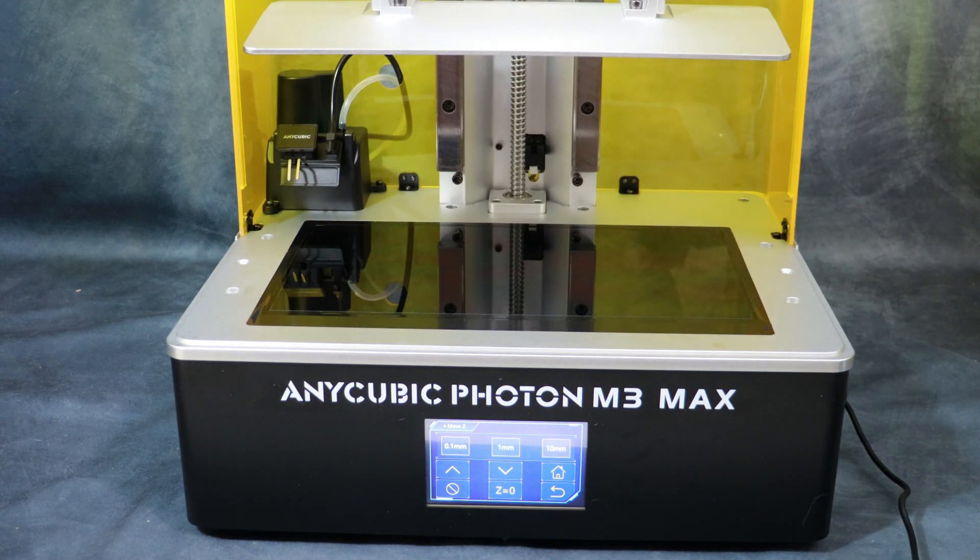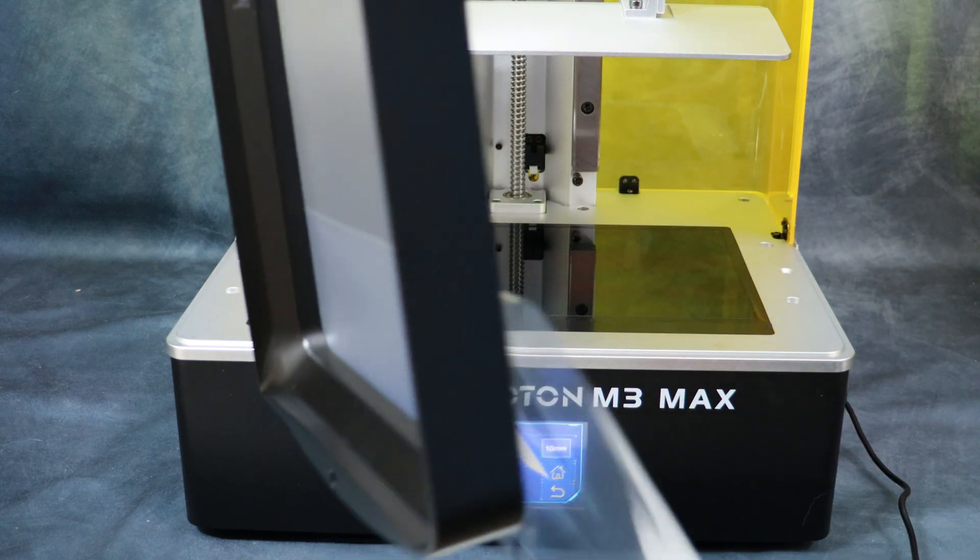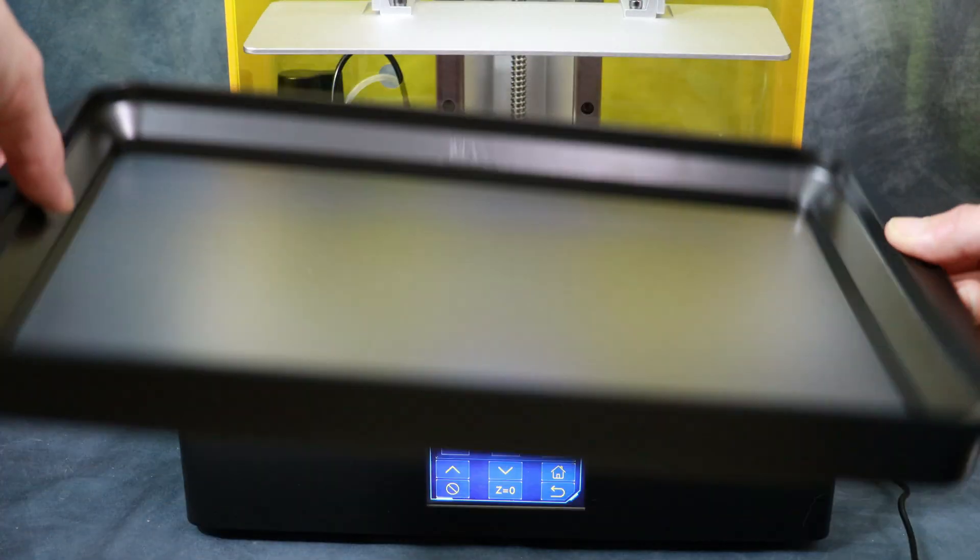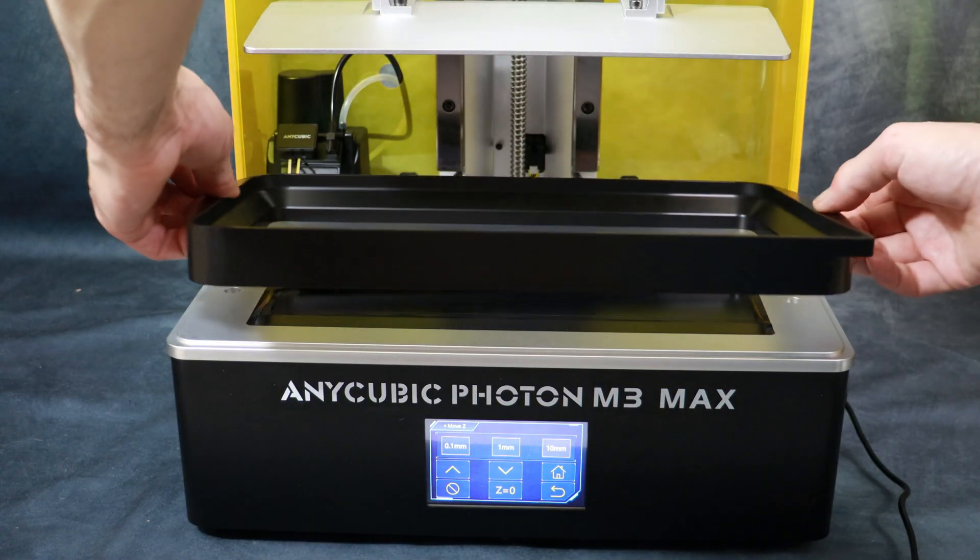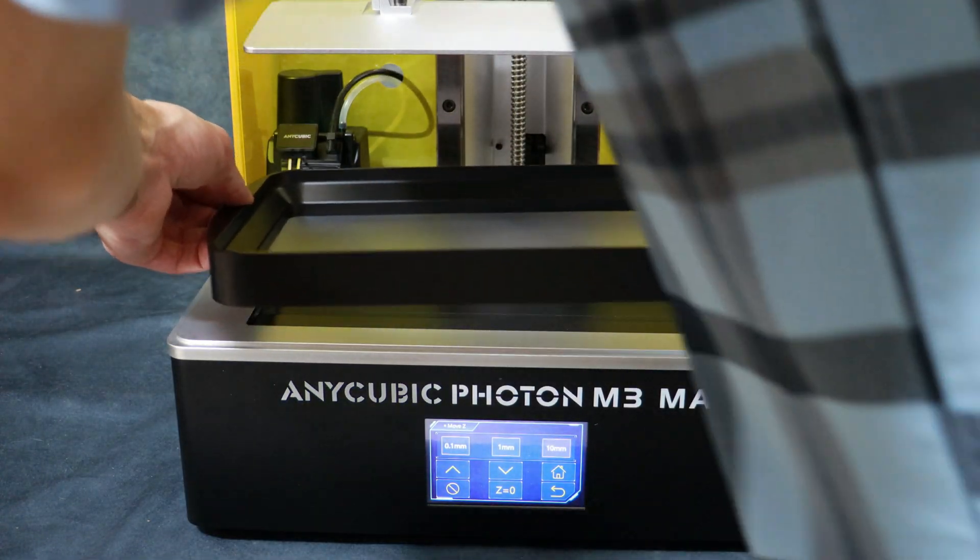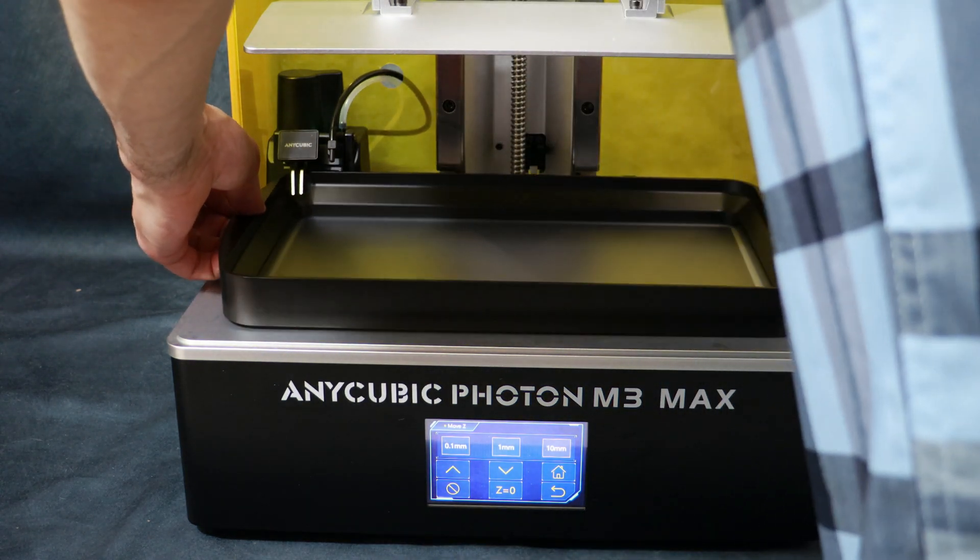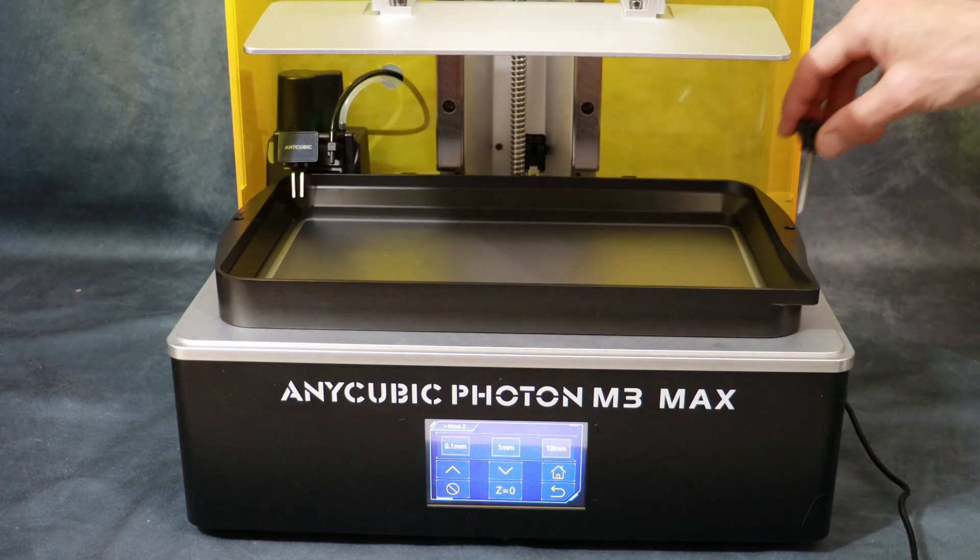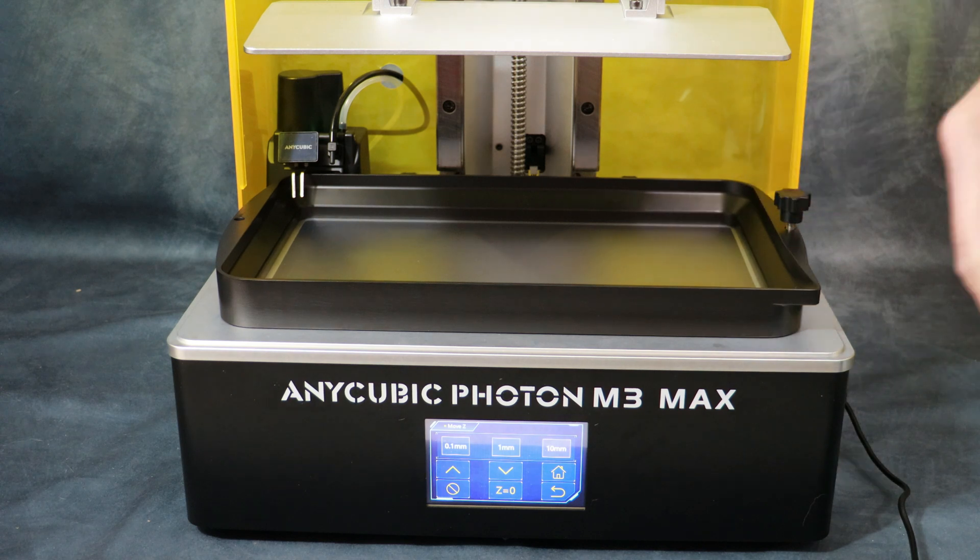Once we have the build platform out of the way we're going to go ahead and install the vat. Remove the protective coating on the back of the vat itself. And here we are, here's the matte vat that Anycubic is using for the M3 Max. Carefully slide the vat in being careful not to damage the autofill system. The vat itself has four legs on the bottom that will sit into four holes on the platform of the printer. Once you have it situated install the two screws and tighten them down.